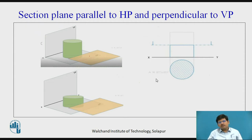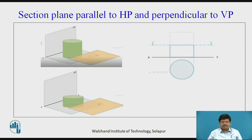In the corresponding orthographic view, we draw the top view below the XY line and the front view above the XY line. This is the actual size of your solid and this is the size after being cut by the cutting plane which is parallel to HP and perpendicular to VP. This cutting plane is perpendicular to VP, so it is seen as a line view parallel to XY and it is seen in the front view.